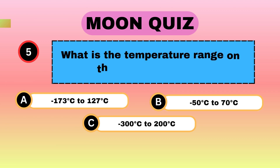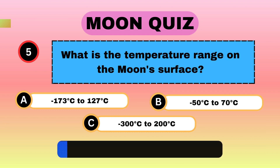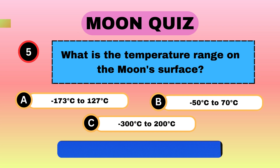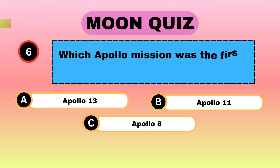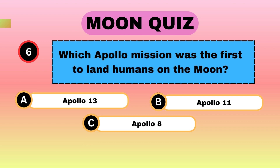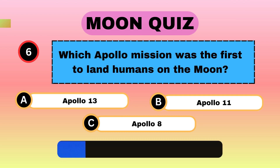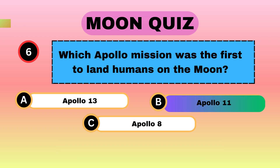What is the temperature range on the Moon's surface? Minus 173 degrees Celsius to 127 degrees Celsius. Which Apollo mission was the first to land humans on the Moon? Apollo 11.